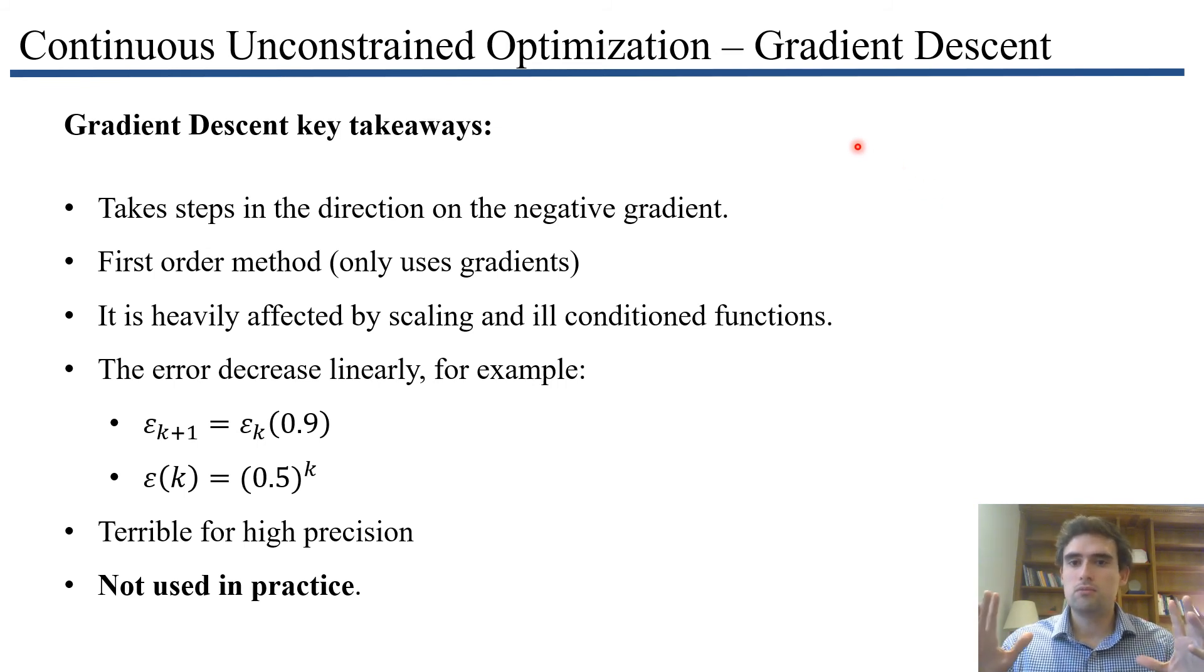The main idea about gradient descent: it takes steps in the direction of negative of the gradient, because this is the direction of maximum decrease of the function locally. This is a first-order method because it only uses gradients. Second-order methods use matrices or Hessians, and zero-order methods don't use derivatives. This method is heavily affected by scaling or ill-conditioned functions. The error decreases linearly.